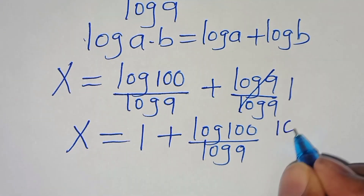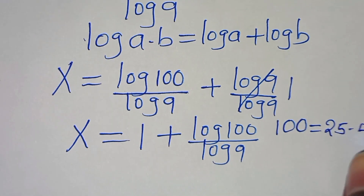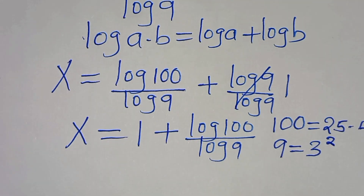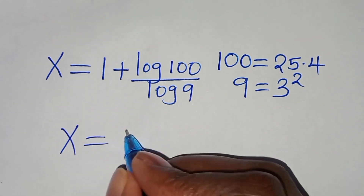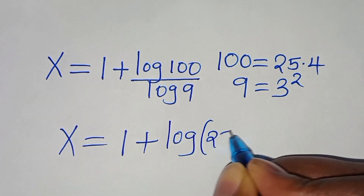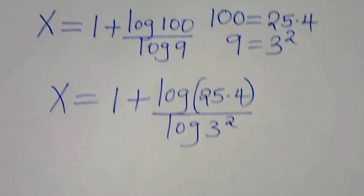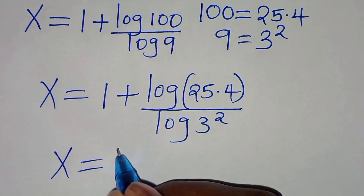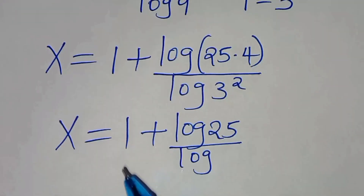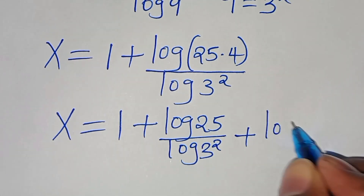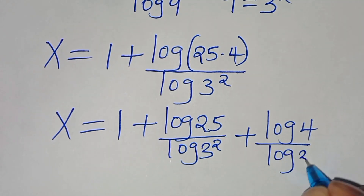The next step is that we can express 100 as 25 times 4, and we can express 9 as 3 to the power of 2. So, substituting this, we have x is equal to 1 plus log(25 times 4) divided by log(3 to the power of 2). Again, log(25 times 4) is in the form of log(a times b), which we can express as log a plus log b. So we have x equal to 1 plus log 25 over log(3²), then plus log 4 over log(3²).